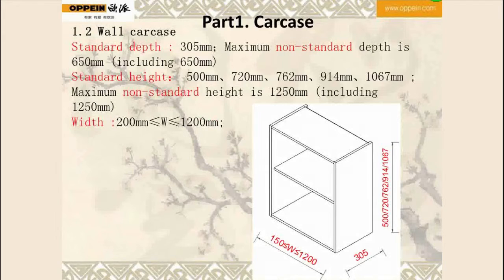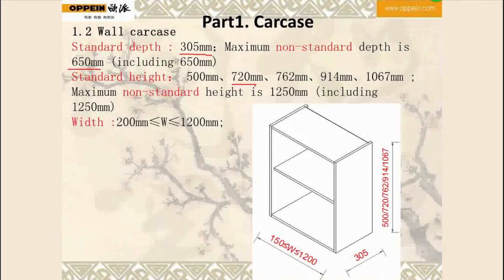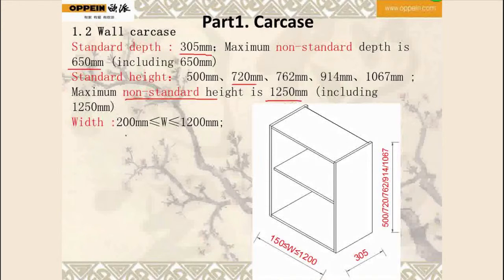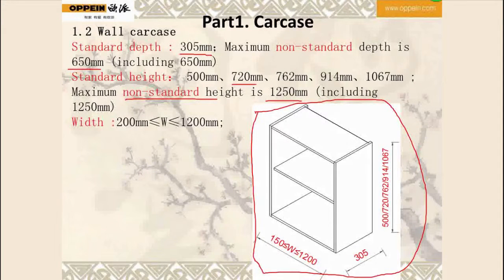For wall carcass, the standard depth is 305 mm and the maximum non-standard depth is 650 mm, including 650 mm. The standard heights are 500 mm, 720 mm, 762 mm, 914 mm, and 1,067 mm. The maximum non-standard height is 1,250 mm, and the width can range from 200 mm to 1,200 mm. We can get the size information from the picture.